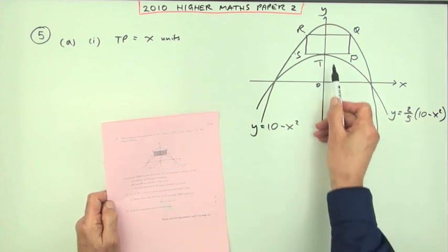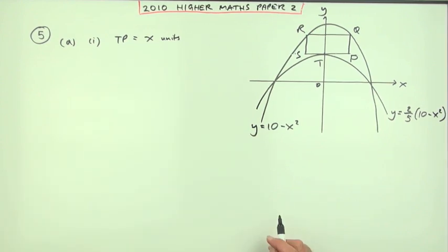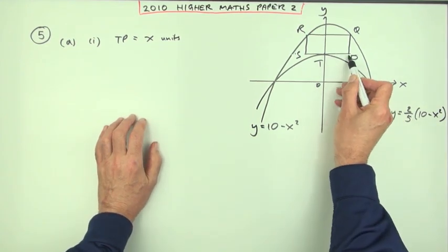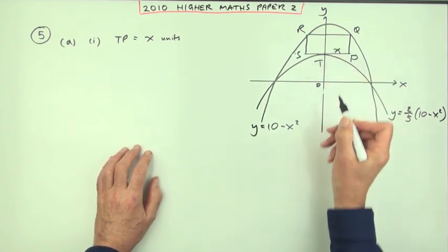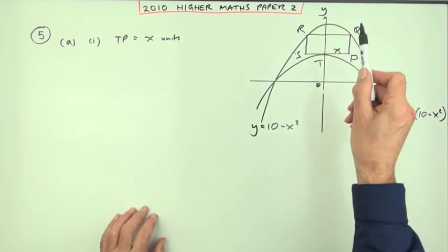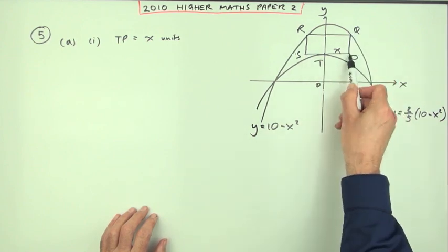And all it says is, let TP equal x units. Well, that's what that is. That distance is the x-coordinate as far as that. Well, put it in anyway. That's x, which means to find that area, it'll be length times breadth. So the length is obviously 2x.